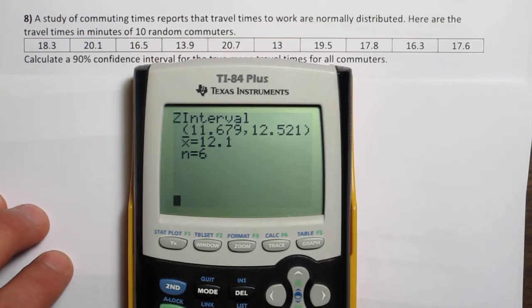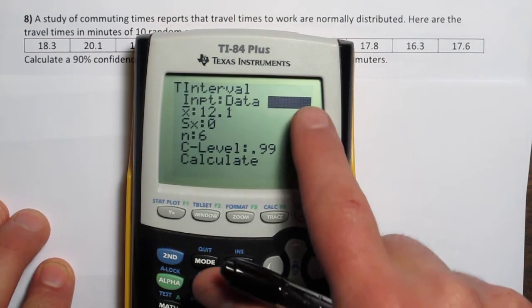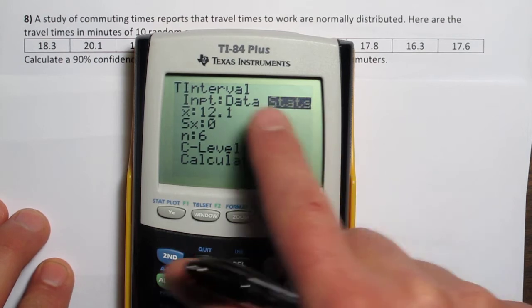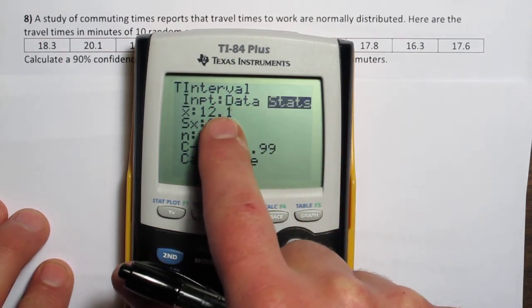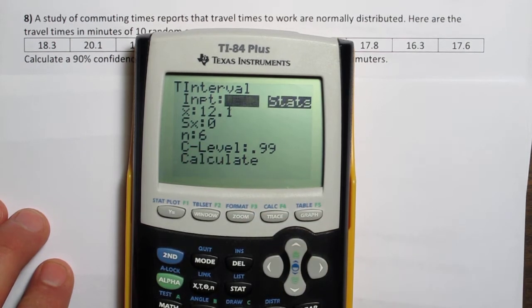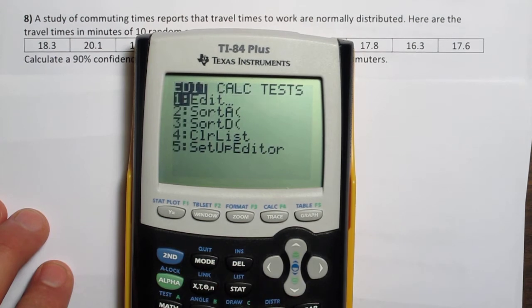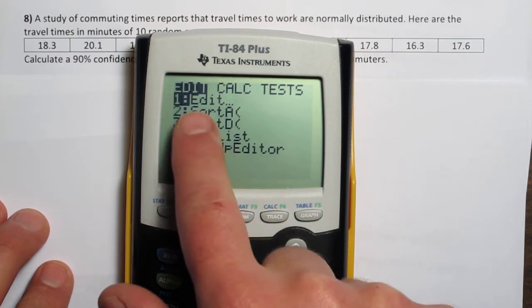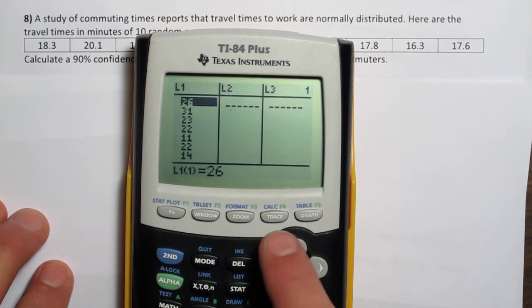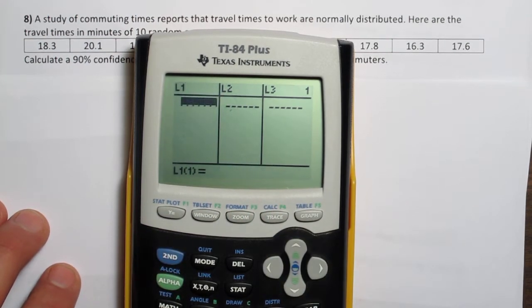If we go to the calculator and go over to test and down to t-interval, you have two options. You can input statistics, so we'd need a sample mean, a sample standard deviation, and the sample size. Or you can input the data directly, and that's the option I'm going to use. If you push the stat button again and get to your edit menu, in the first list here, list 1, push up and clear it if you have something in there.